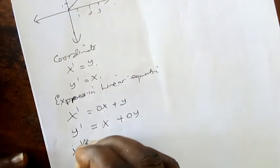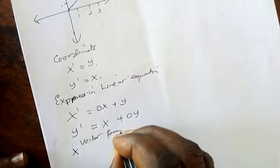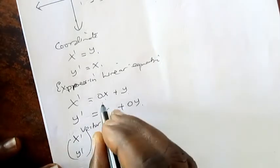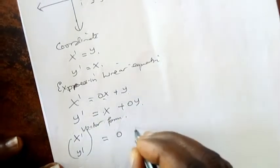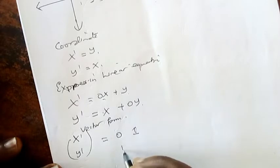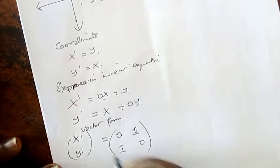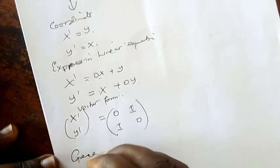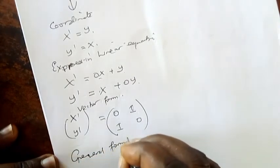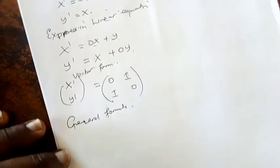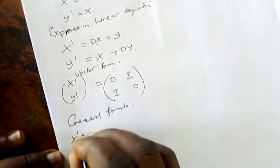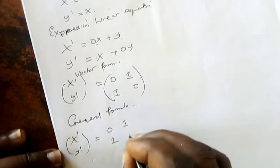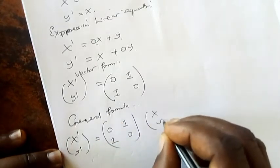Writing it in vector form: (x', y') equals the matrix [0, 1; 1, 0] times (x, y). So the general formula is: (x', y') = [0, 1; 1, 0] times (x, y). This represents our image, transformation, and given point respectively.